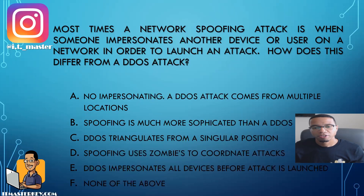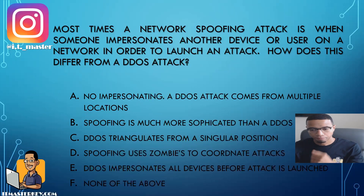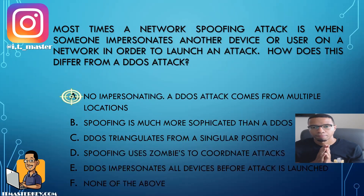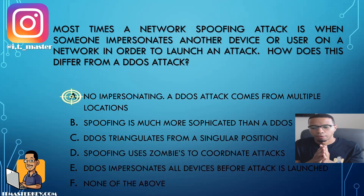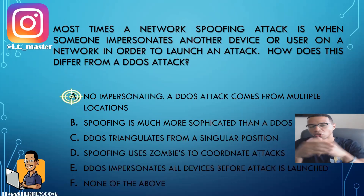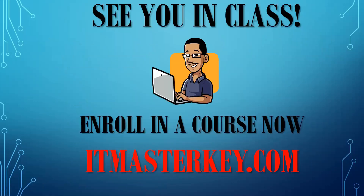Most times, a network spoofing attack is when someone impersonates another device or user on a network in order to launch an attack. How does this differ from a DDoS attack? A DDoS attack doesn't really require impersonation. It mostly tries to get as many computers or devices as possible to attack one singular device — whether it's a server, a website, so on and so forth. It's usually multiple locations, multiple devices, all coordinated to go after one single target.